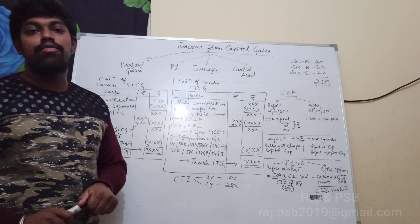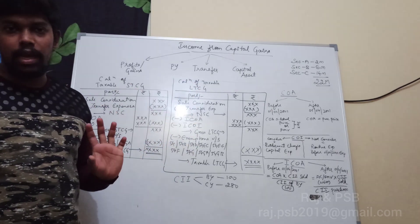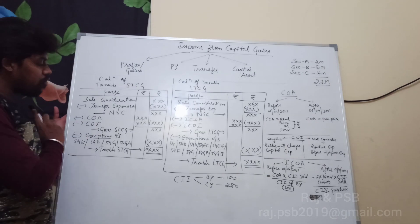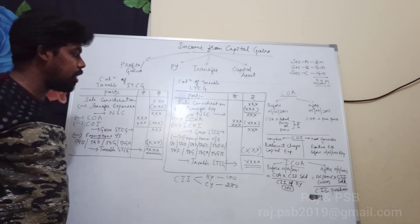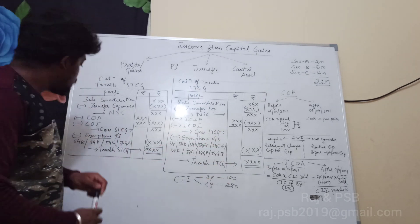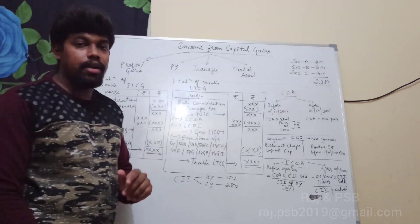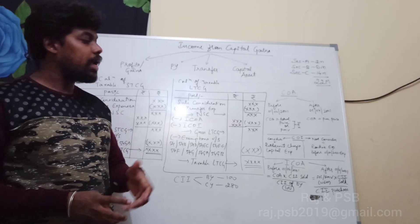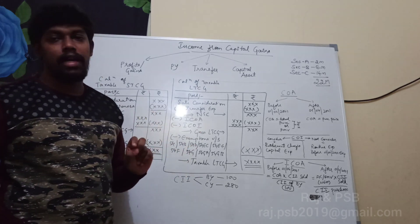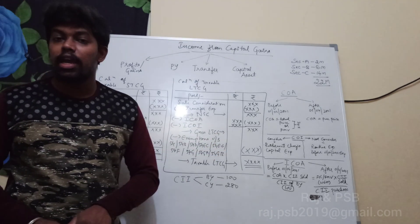Next is the format for calculation of taxable long-term capital gains. The same format applies, but for cost of acquisition and cost of improvement, an index cost will be used instead. The government provides an index table — the Cost Inflation Index — to calculate the indexed cost of acquisition and indexed cost of improvement.